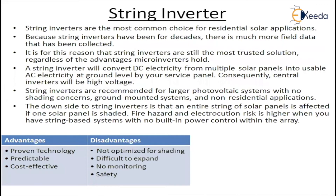String inverters are the most common choice for residential solar applications. Because string inverters have been used for decades, there is much more field data that can be collected. For this reason, string inverters are still a more trusted solution regardless of the advantages that microinverters offer. A string inverter converts the DC electricity from multiple solar panels to usable AC electricity at the ground level, near the service panel.